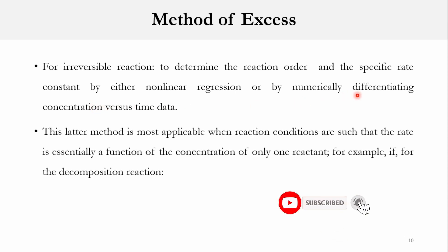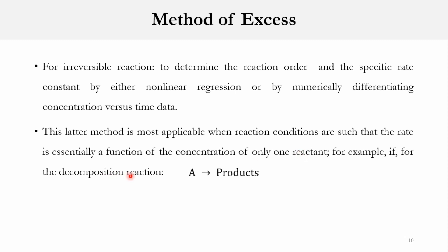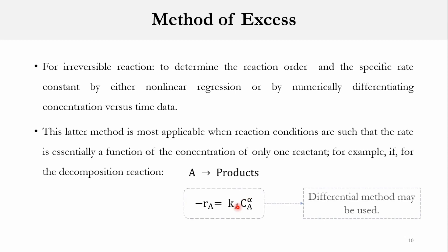This is done by either non-linear regression or by numerically differentiating concentration versus time data. The numerical differentiation method is most applicable when the rate of reaction is a function of the concentration of one reactant. For example, for a decomposition reaction where A goes to products, we write: minus R_A equals K_A times C_A raised to power alpha, where alpha is the reaction order and K is the specific reaction rate constant. For such a system, the differential method can be used.